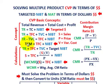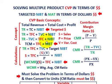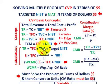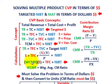When solving for cost volume profit in terms of dollars, we concentrate on the total contribution margin. Our total revenues S equals our total fixed cost plus total variable cost — represented as sales times variable unit cost divided by unit price — plus some targeted net income before taxes. This all boils down to determining our weighted contribution margin ratio, which times our sales equals total fixed cost plus net income before taxes.